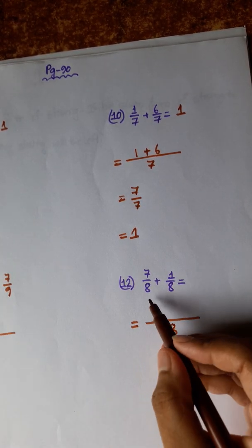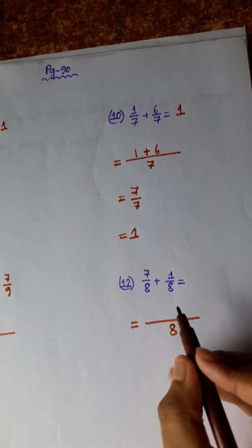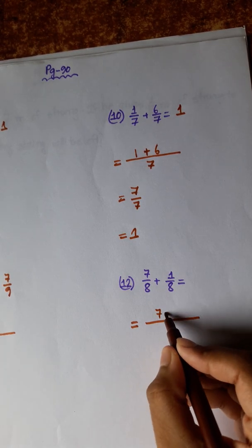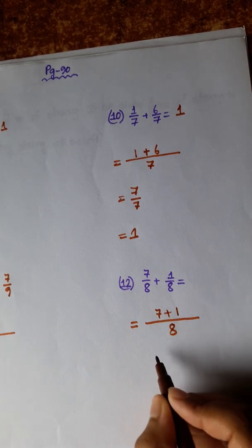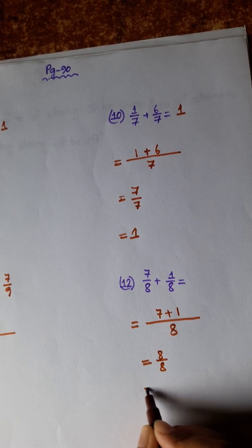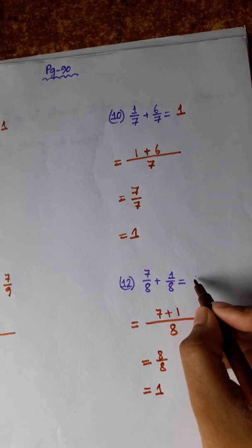The two denominators are the same. 7 plus 1 equals 8 by 8, which simplifies to 1.